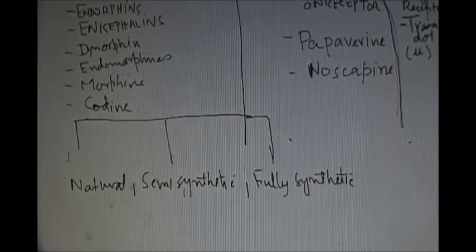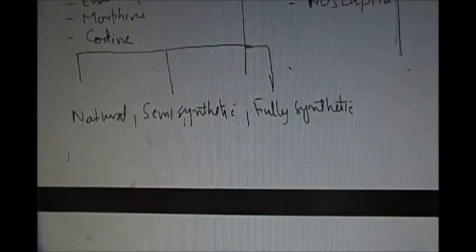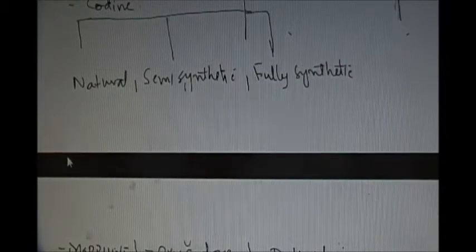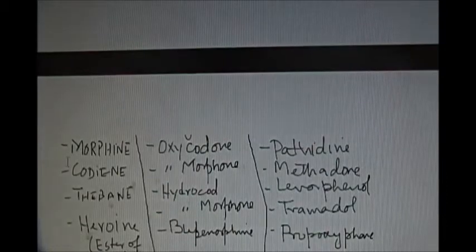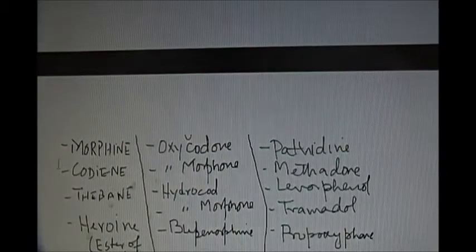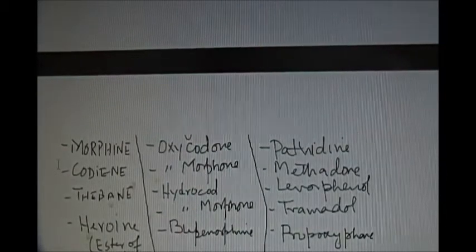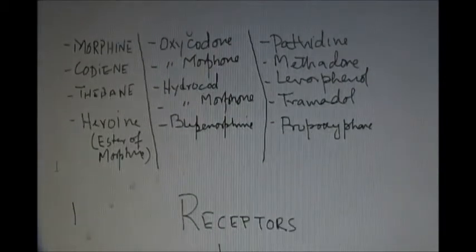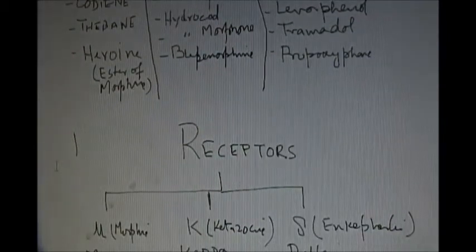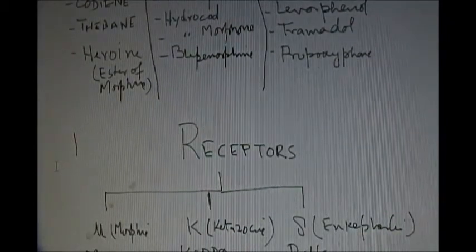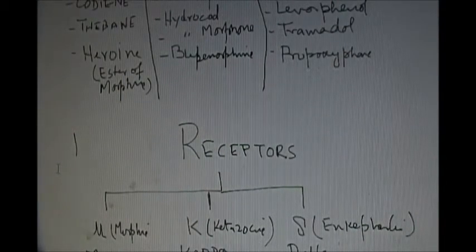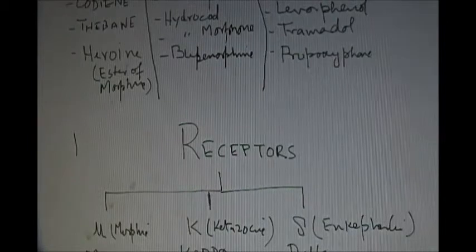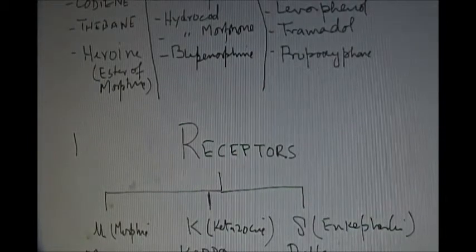The exogenous opioids which are not produced in the body may be divided into natural, semi-synthetic and fully synthetic. The natural opioids are morphine, codeine, thebaine and heroin. Heroin is the ester of morphine but when ingested it is inactive and converted in the body to morphine.